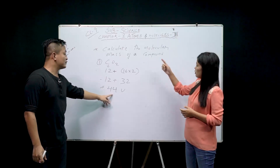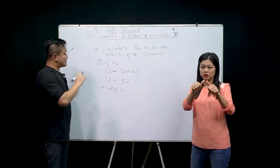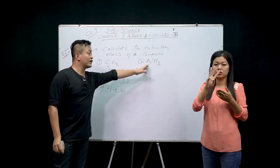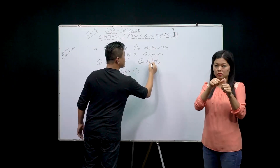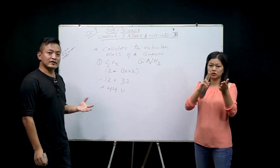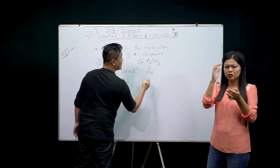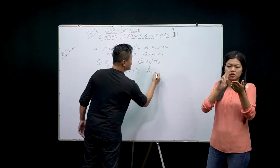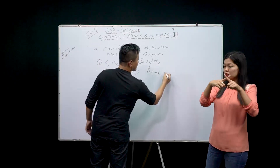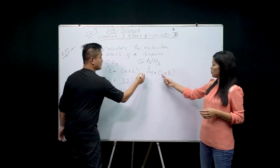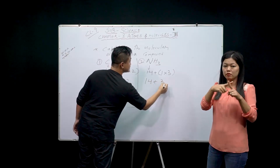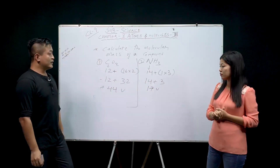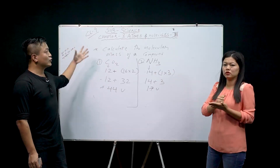Now let's calculate for ammonia; NH₃ is the chemical formula for ammonia. The atomic mass for nitrogen is 14. Hydrogen's atomic mass is 1, and there are 3 hydrogen atoms. So we have 14 + (1 × 3) = 14 + 3 = 17. The molecular mass of ammonia is 17 u.